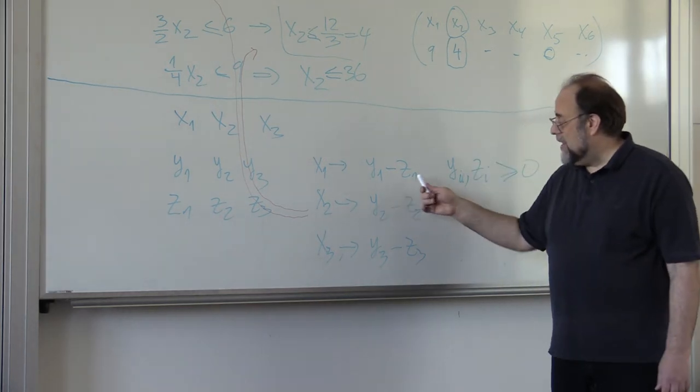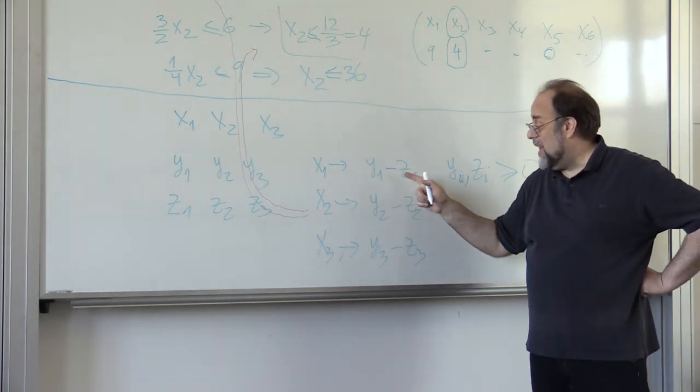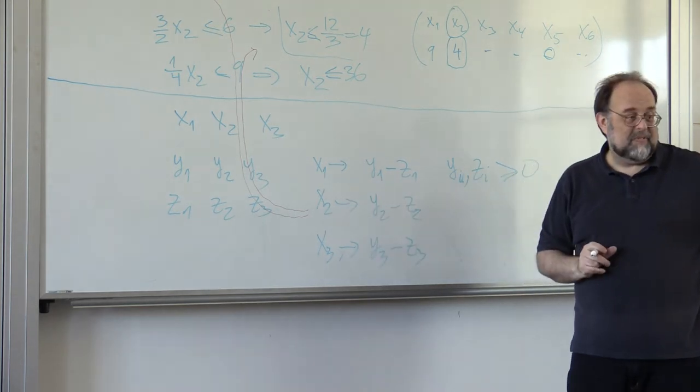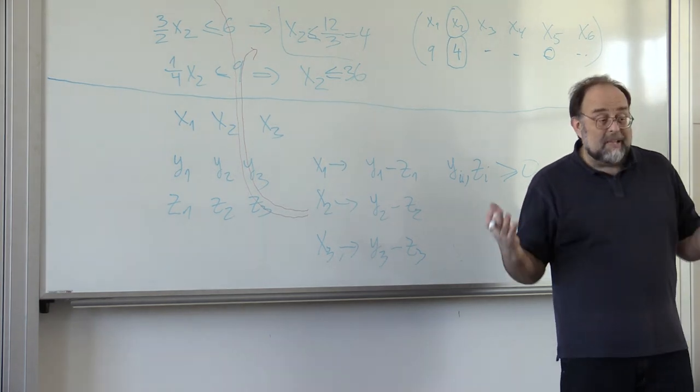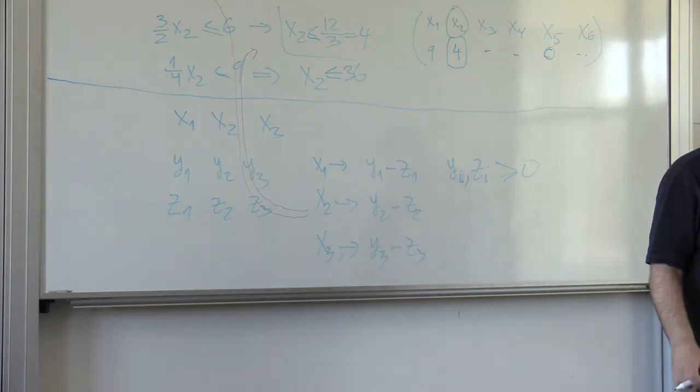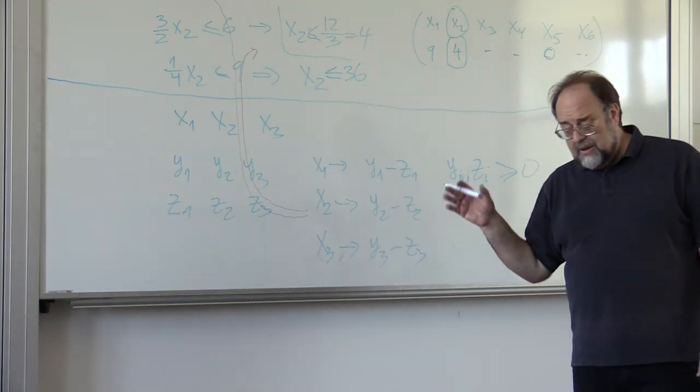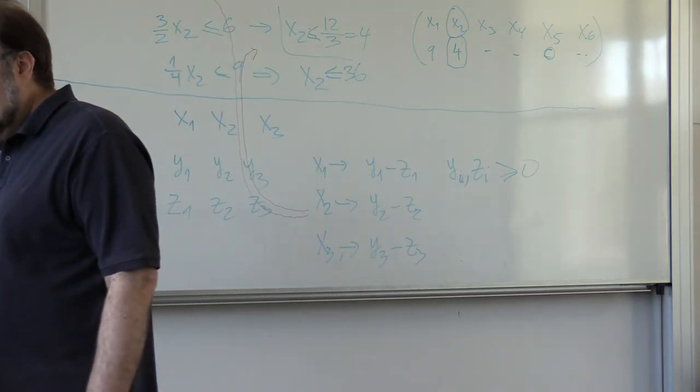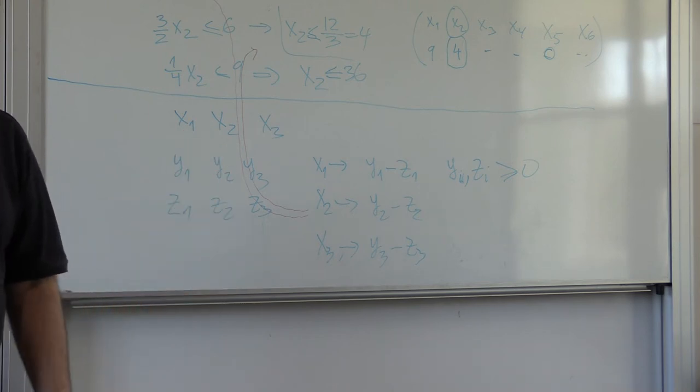And now you replace x1 by y1 minus z1. You replace everywhere x2 by y2 minus z2, and you replace everywhere x3 by y3 minus z3. And you do put requirements yi and zi, that's why they are all non-negative. But because one can be either larger or smaller than the other, it will allow you to have both positive and negative values for the original variables. So you double the number of variables, so the problem becomes larger, and this has computational cost, but this is how you do it. And modern linear programming algorithms can solve gigantic systems with thousands of equations and thousands of variables.